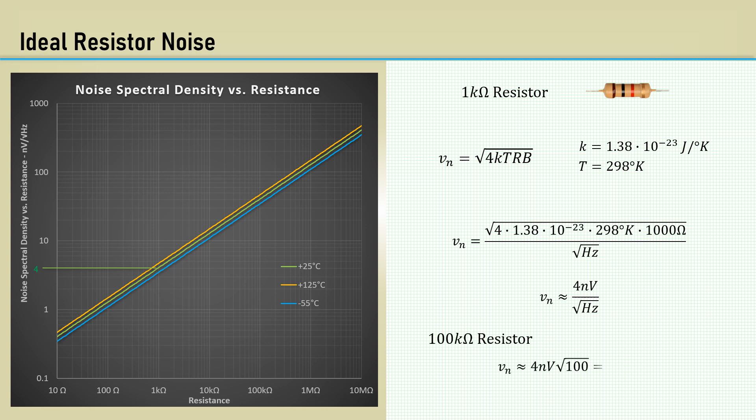For instance, a 100K resistor is the square root of 100 times 4 nanovolts per square root hertz, which equals 40 nanovolts per square root hertz.